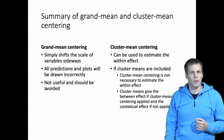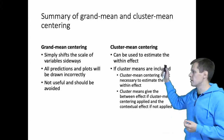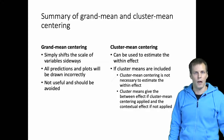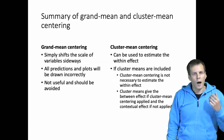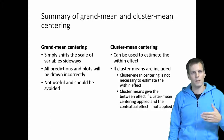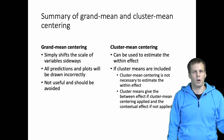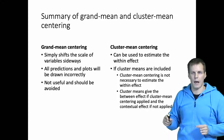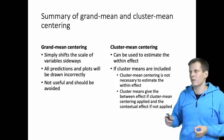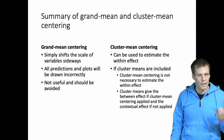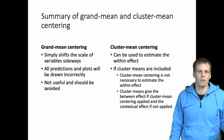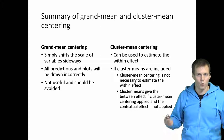Cluster mean centering is useful — it can be used to estimate the within effect, i.e., how a change in an individual-level variable affects an individual-level outcome. However, the same within estimate can also be obtained by including cluster means alongside the original variable in the model. Cluster mean centering after including the cluster mean is necessary only if you want the between effect, but typically the contextual effect is more interesting, in which case you don't need cluster mean centering.